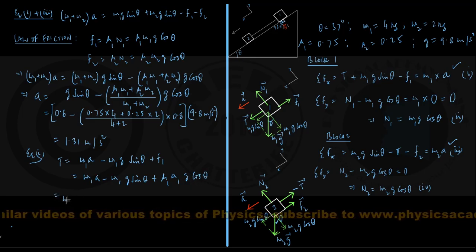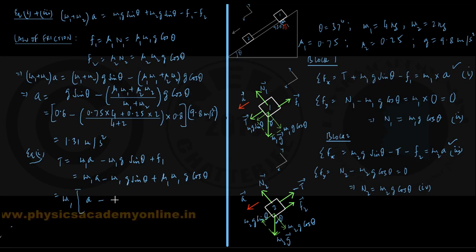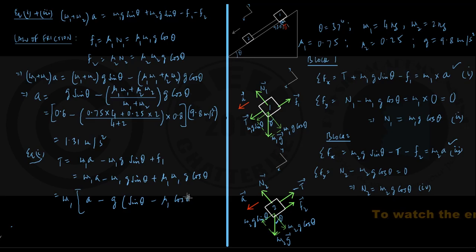This is giving me, if I take m1 as common, I enter inside a bracket, this is a minus, well, if I take g again common inside, then I am getting sin theta minus mu1 into cos theta.